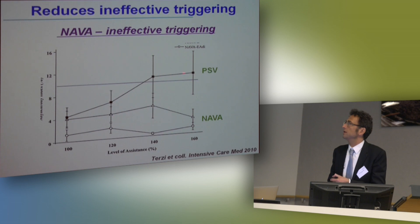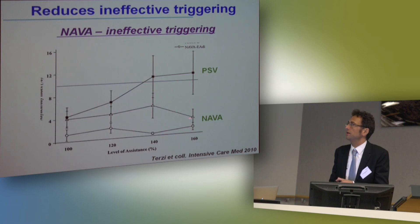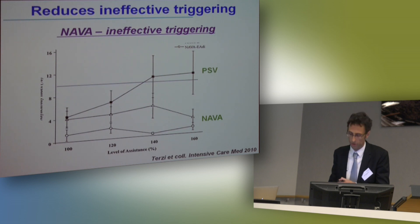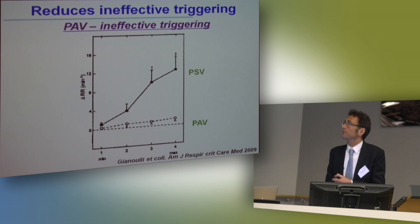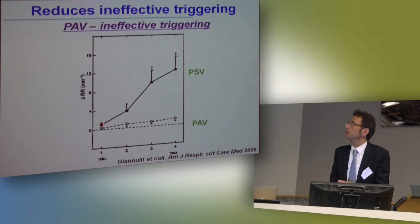Another option is to use a proportional mode such as NAVA, which will prevent overinflation. Compared to PSV, with NAVA, as we increase the level of assistance, we do not see an increase in the asynchrony index, whereas with pressure support ventilation, increasing the level of assistance increases the proportion of ineffective triggering. PAV shows exactly the same behavior: increasing the level of assistance does not increase the proportion of ineffective triggering, while with PSV it does.